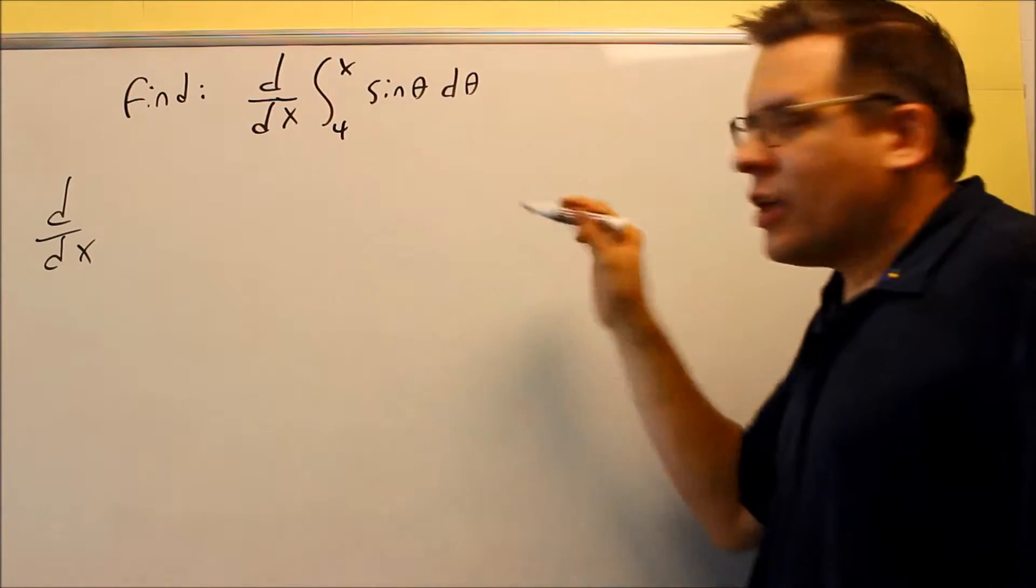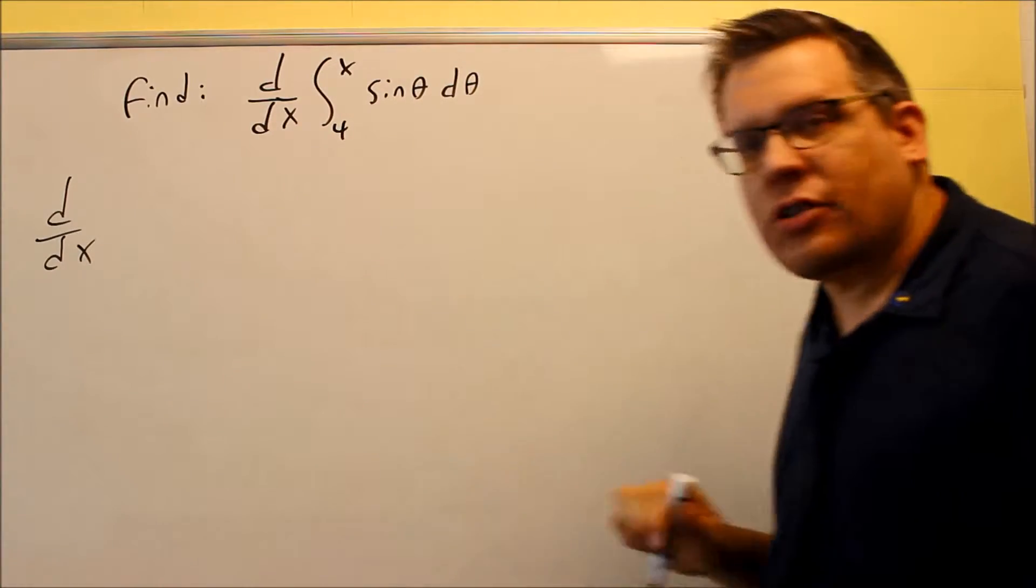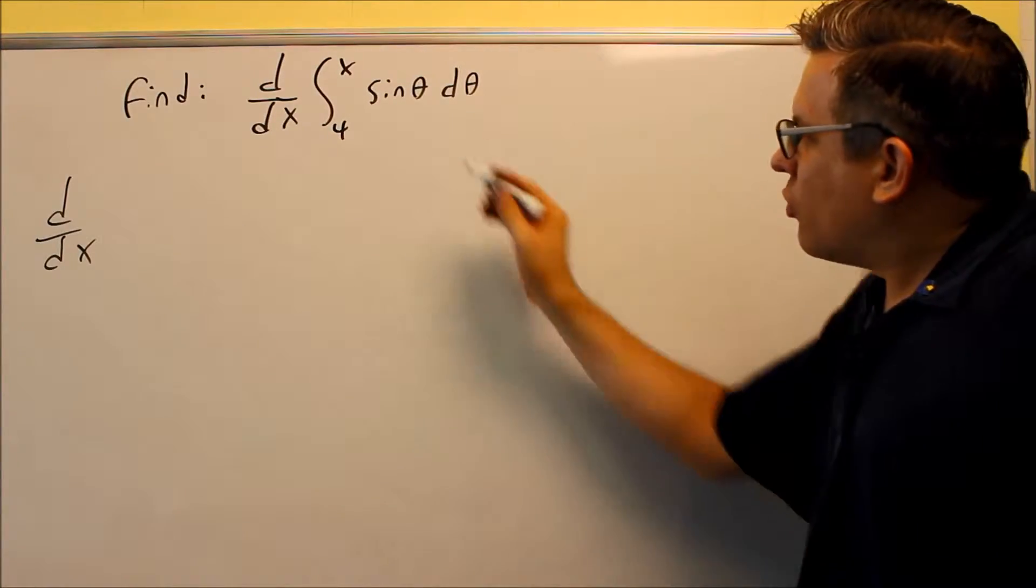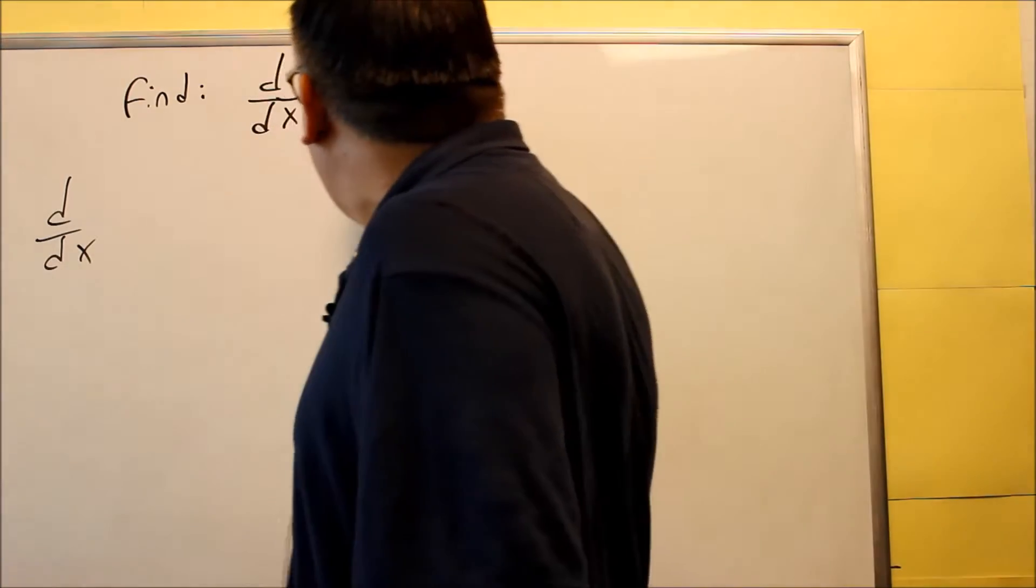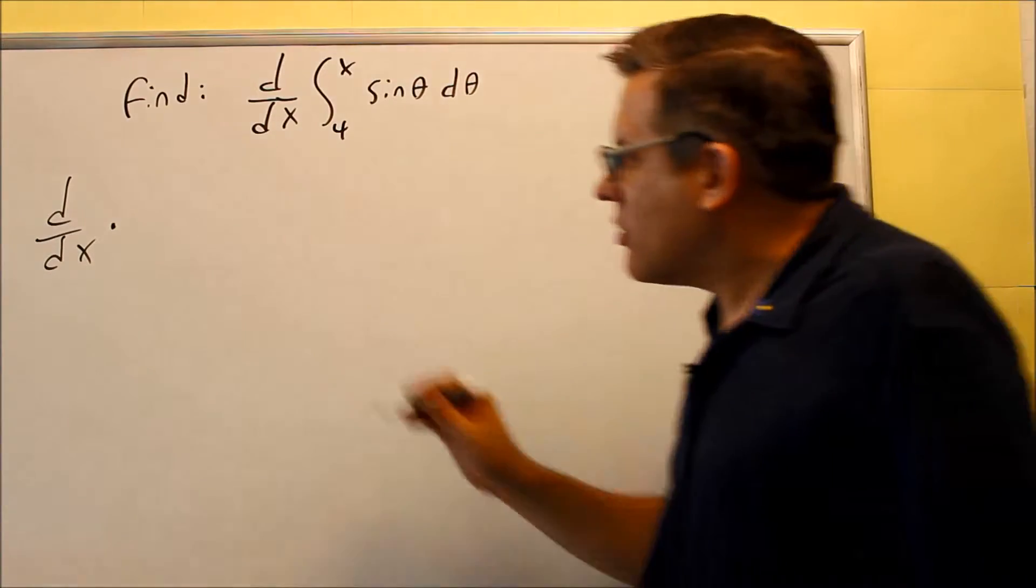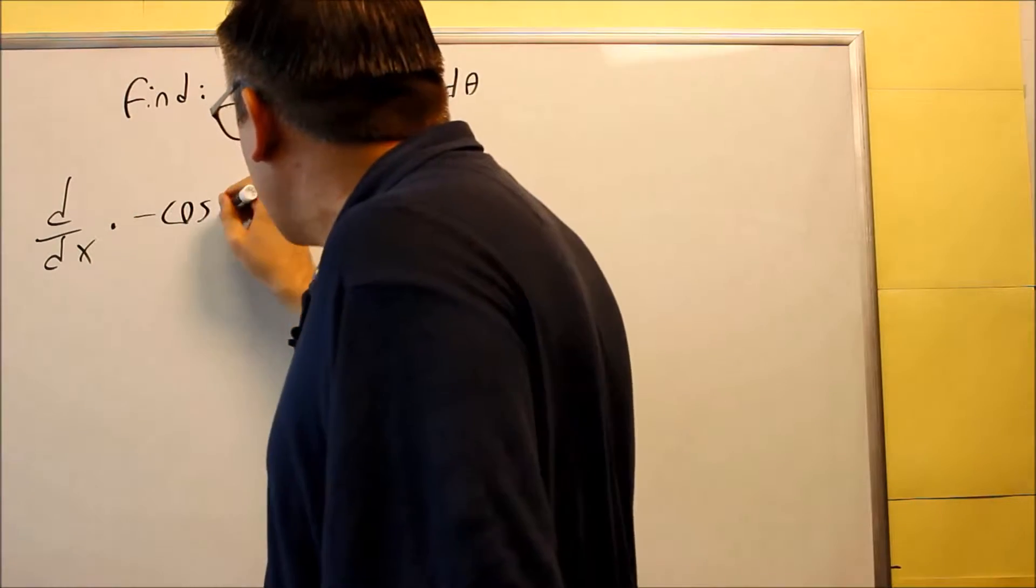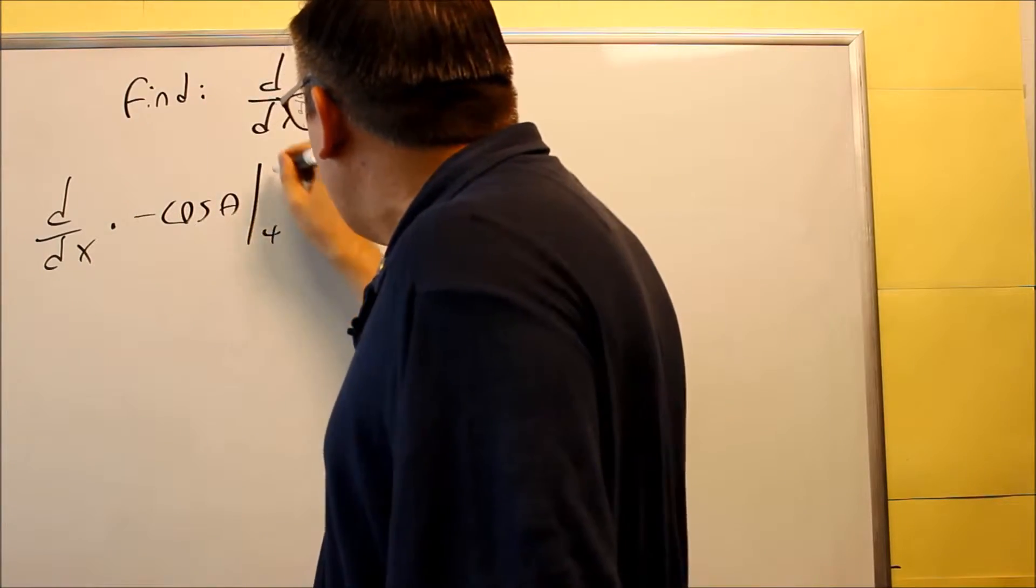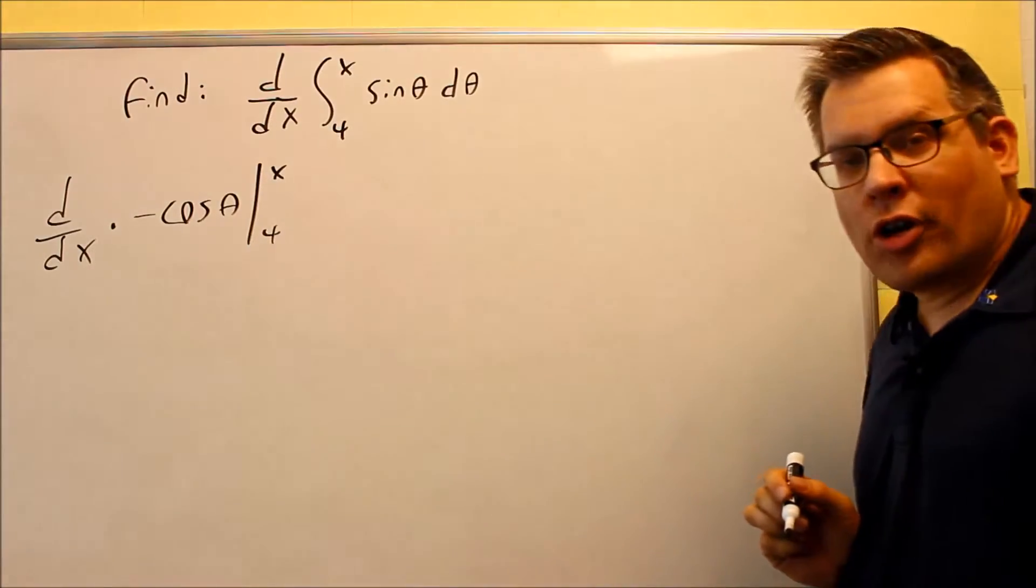I'm going to work this whole thing out and get an answer, and then I'll come back and I'll take the derivative. So first we're going to take the anti-derivative. The anti-derivative of sine is negative cosine, don't forget the negative there, and you're going to be going between 4 and x.